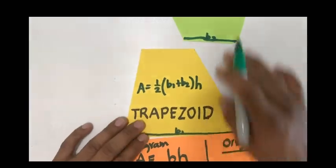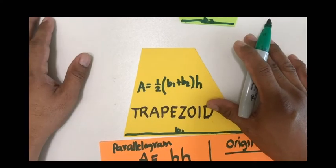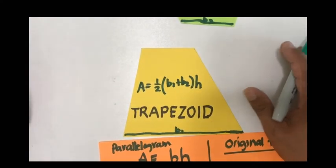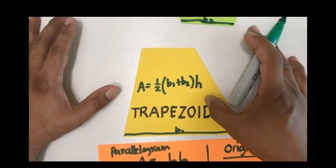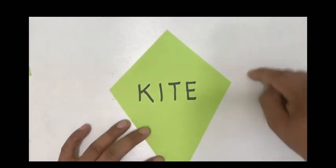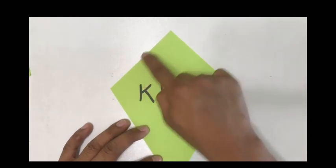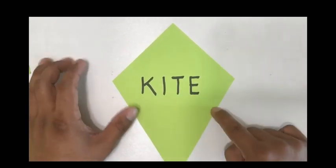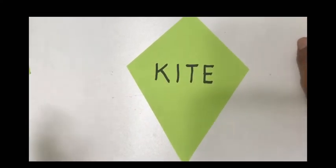That is the history behind this formula. Mathematicians did not just wake up and realize there was already a formula from heaven — they derived this formula using this process. For the kite, the sides are not parallel. There are no parallel sides, but consecutive sides are equal: this side equals that side, and this side equals that side. So how are we going to use the slicing technique to find the formula for the area of this kite?